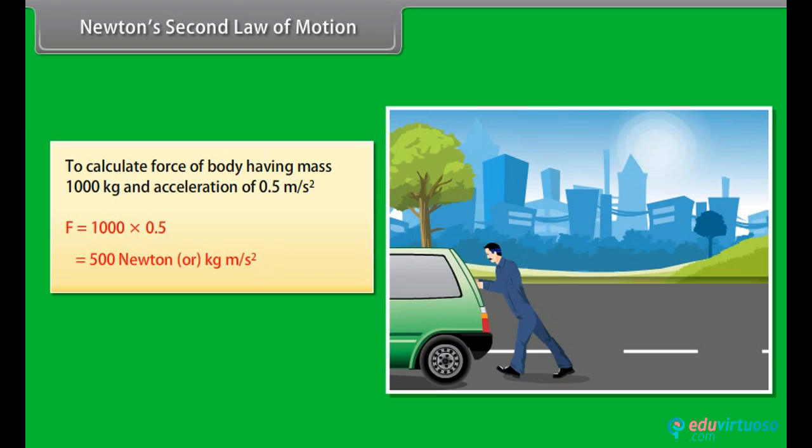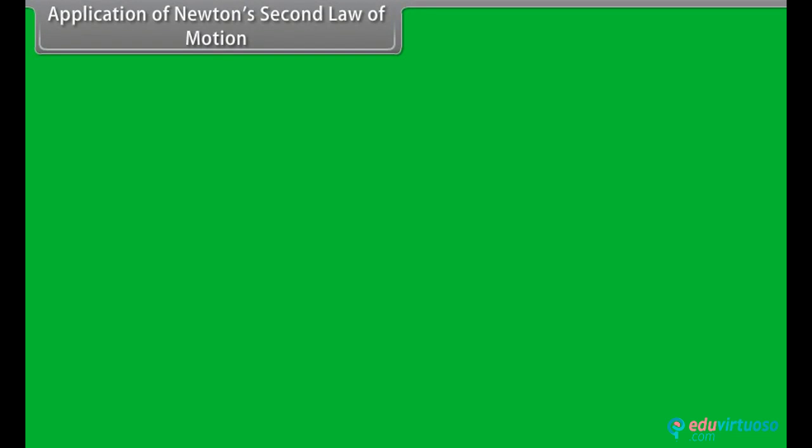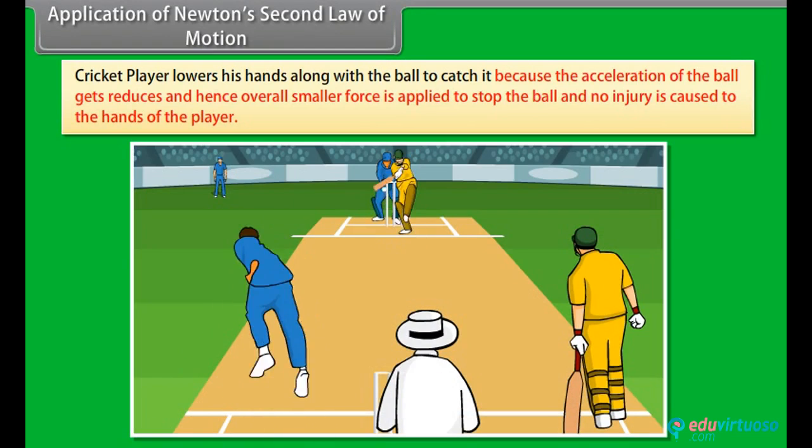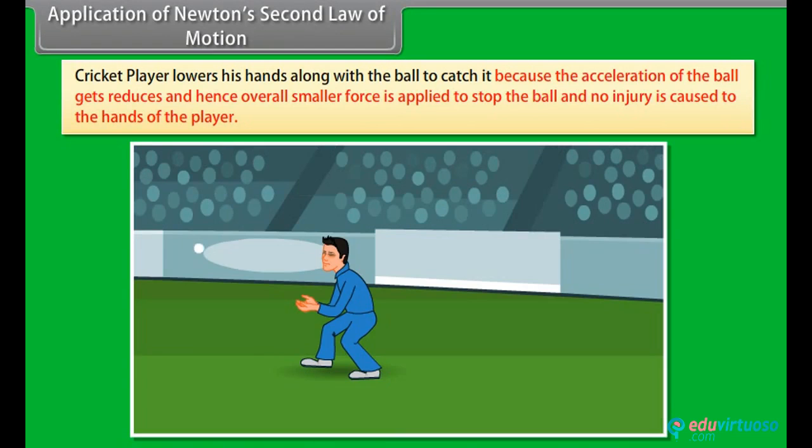Application of Newton's second law of motion. A cricket player lowers his hands along with the ball to catch it because the acceleration of the ball gets reduced and hence overall smaller force is applied to stop the ball and no injuries caused to the hands of the player.